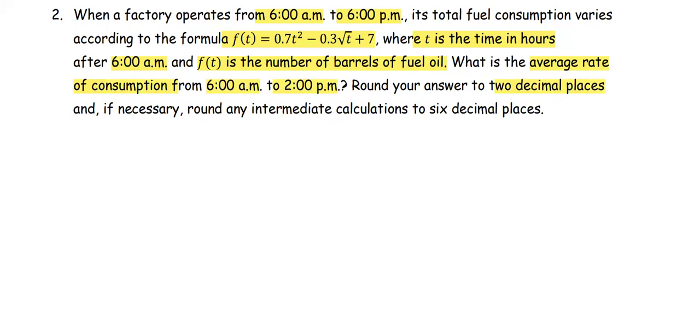The function is provided as f(t) = 0.7t² - 0.3√t + 7. So we're going to compute the average rate of consumption.